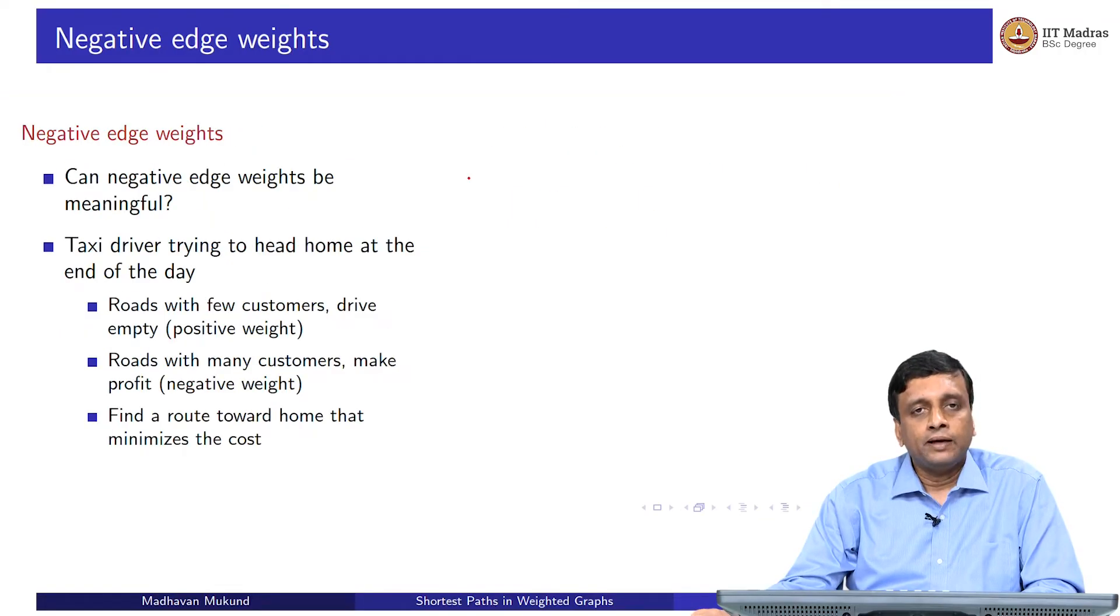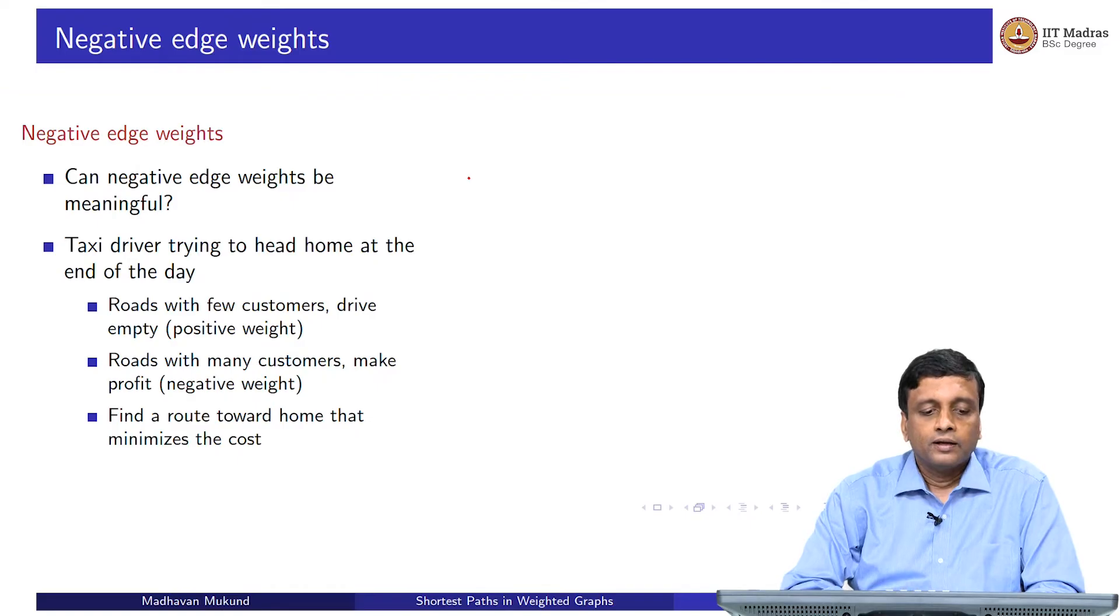We mentioned that the weights can be arbitrary real numbers. You can try to imagine what it would mean to have a negative weight or a negative cost. Suppose you are running a taxi, you are a driver of an OLA or an Uber. Now, towards the end of your shift, you would ideally like to finish your run close to home, so that you have less time to go before you reach your destination.